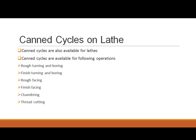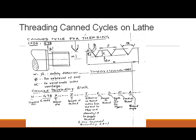Canned cycles are also available for lathe machines, covering rough turning and boring, finish turning and boring, rough facing, finish facing, chamfering, and thread cutting. Almost all lathe operations require repeat translatory motion of the tool, which is why canned cycles are used. One such cycle is the threading canned cycle, which uses the G78 code.